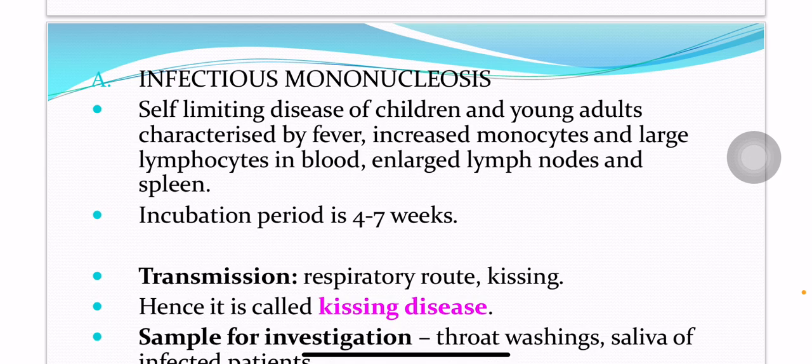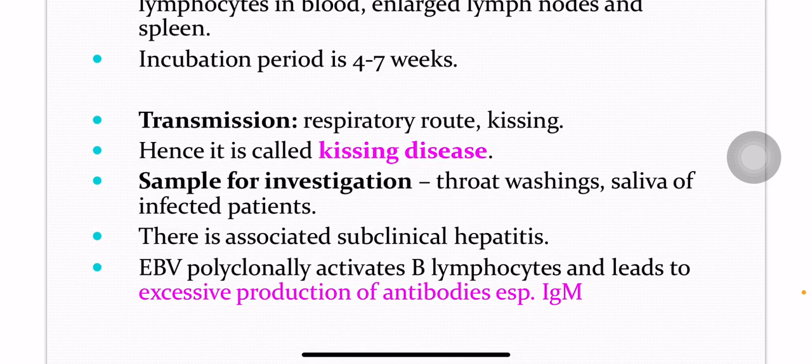Transmission of infectious mononucleosis takes place by the respiratory route as well as by kissing. Hence, it is also known as kissing disease. Samples for investigation include throat washings and saliva of the infected patients. There is associated subclinical hepatitis.